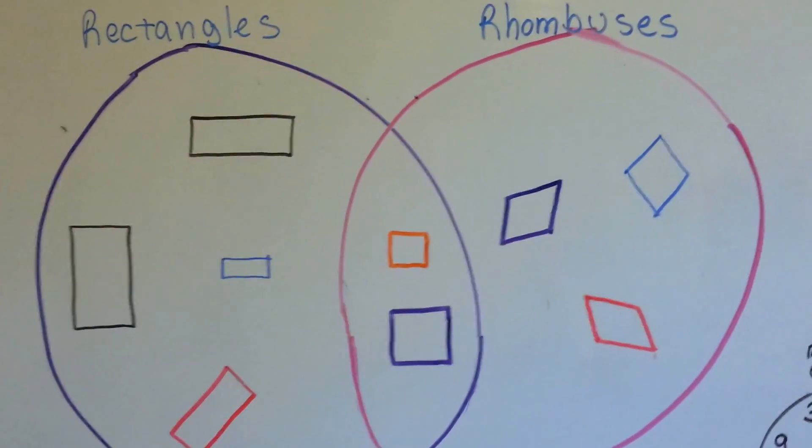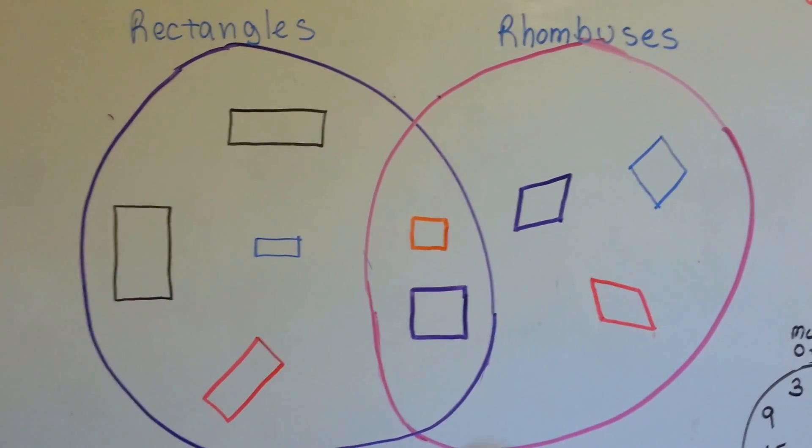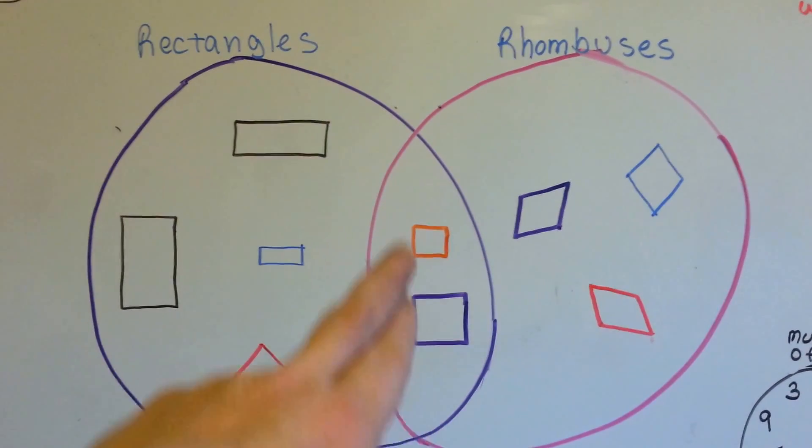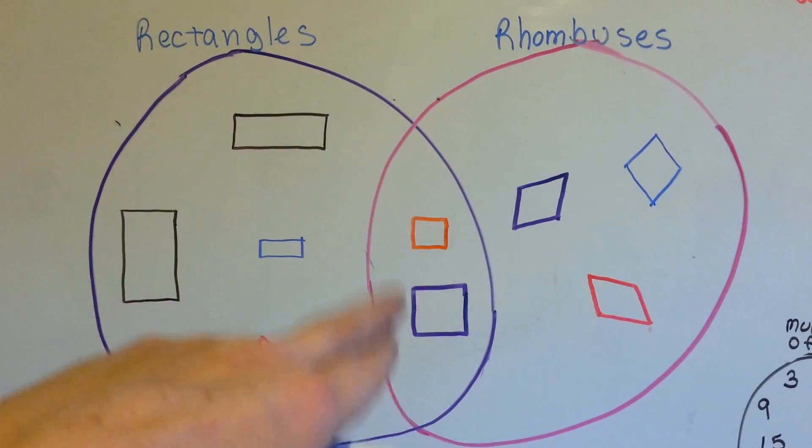So I made this one. It's not perfect, so don't laugh. But this side is rectangles, this side is rhombuses, and the part in the middle are both rectangles and rhombuses. This is the part that are the same.